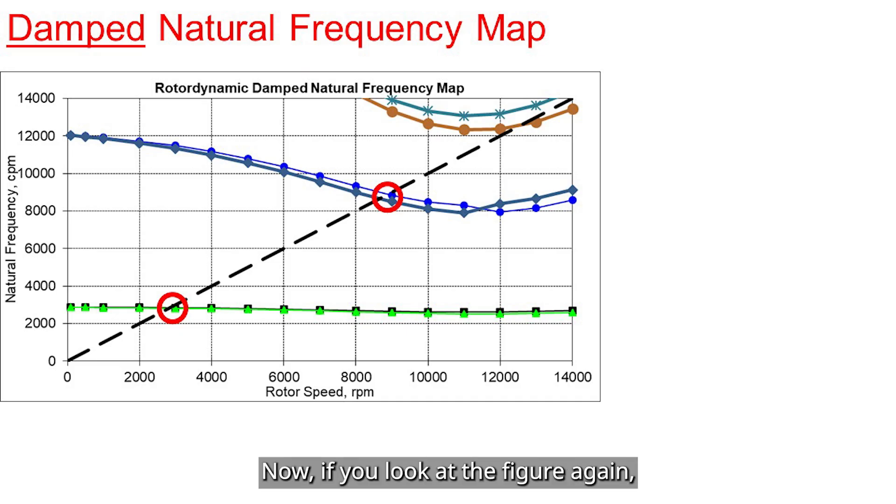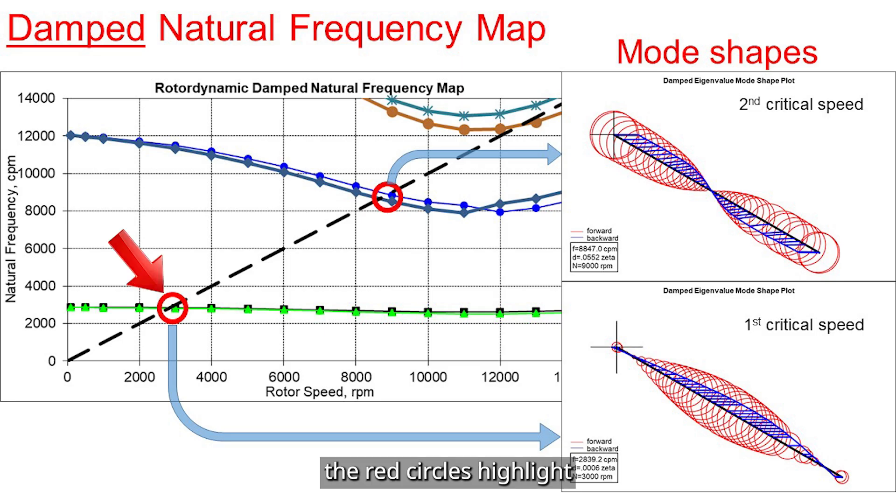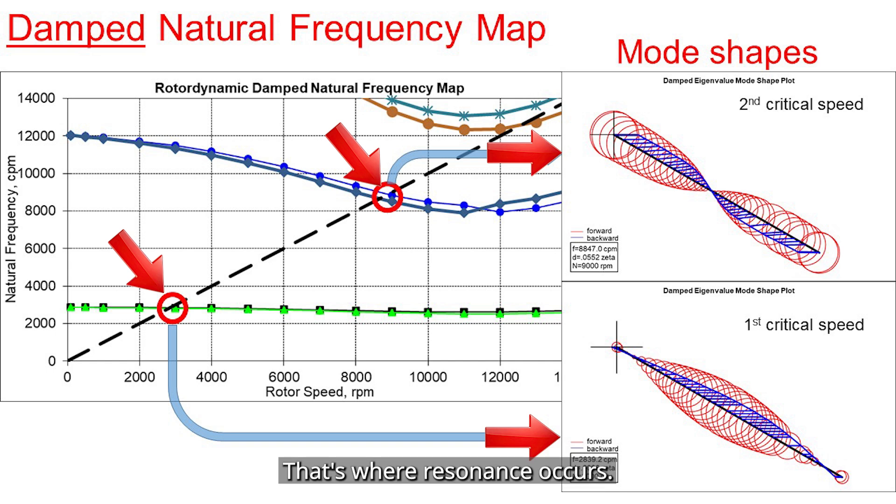In this example, I've set the bearing stiffness to decrease with speed, which, again, can be seen in real machines. Now, if you look at the figure again, the red circles highlight where the rotor speed matches the natural frequency. That's where resonance occurs.